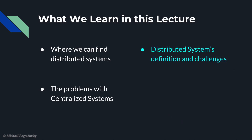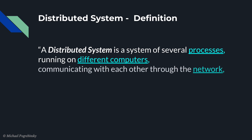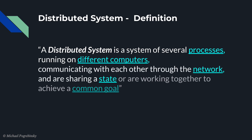So before we start learning how to build such distributed systems, let's define exactly what we mean by that term. A distributed system is a system of several processes running on different computers, communicating with each other through the network, and sharing a state or working together to achieve a common goal. Although it's a short definition, there is a lot in it, so let's discuss the highlighted components one by one.